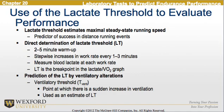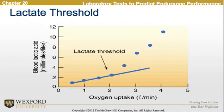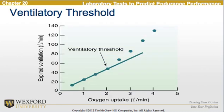Looking at the prediction of lactate threshold by ventilatory alterations, the ventilatory threshold is the point at which there is a sudden increase in ventilation, and this is used to estimate the lactate threshold. Here is a graph displaying how lactate threshold is measured in relation to oxygen uptake, and we also see the ventilatory threshold as a predictor of the lactate threshold.